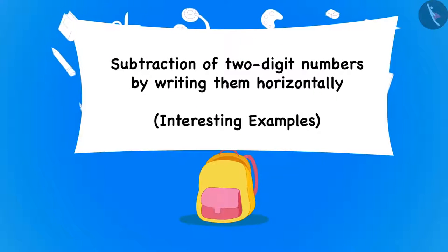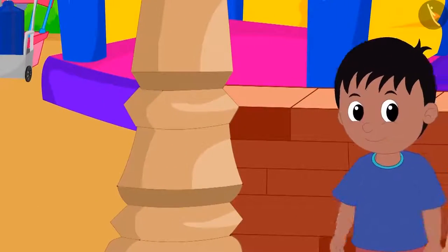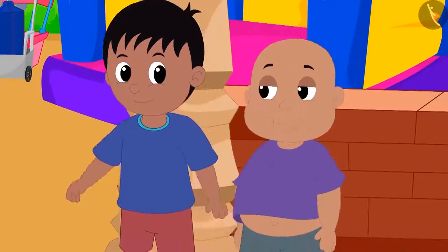We will see some interesting examples of subtraction of two-digit numbers by writing them horizontally. Today Raju and Bablu are walking in the fair.